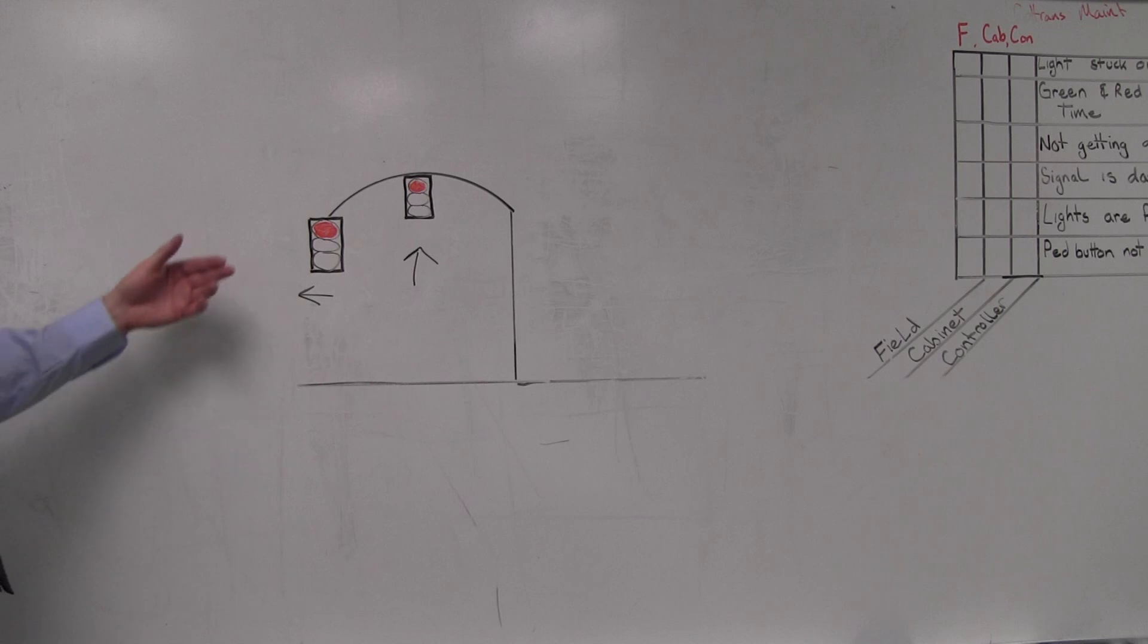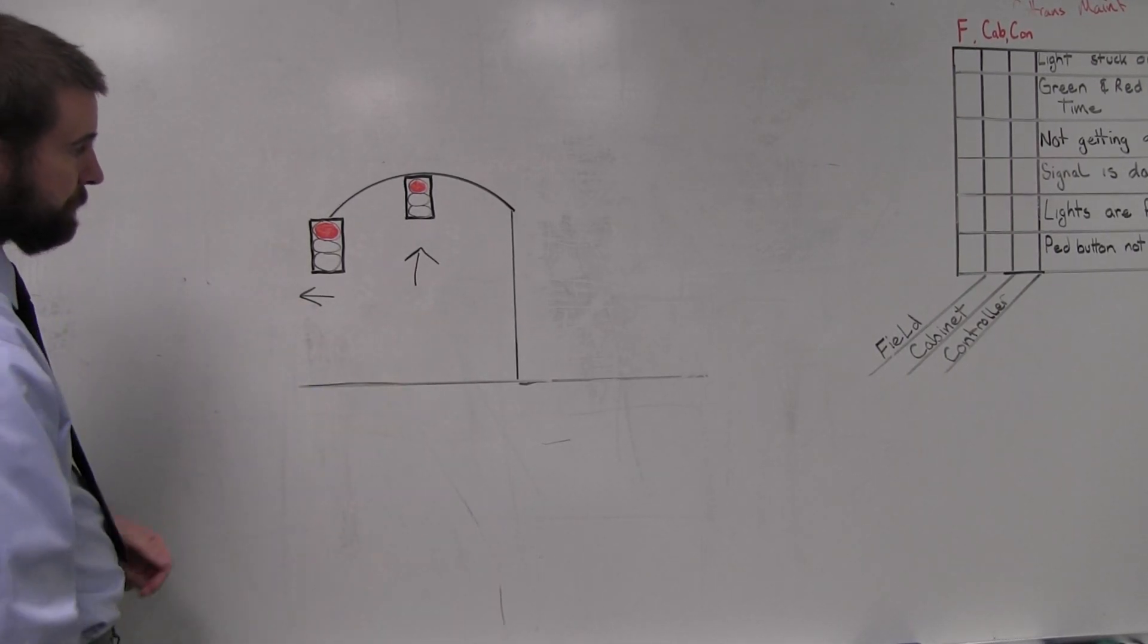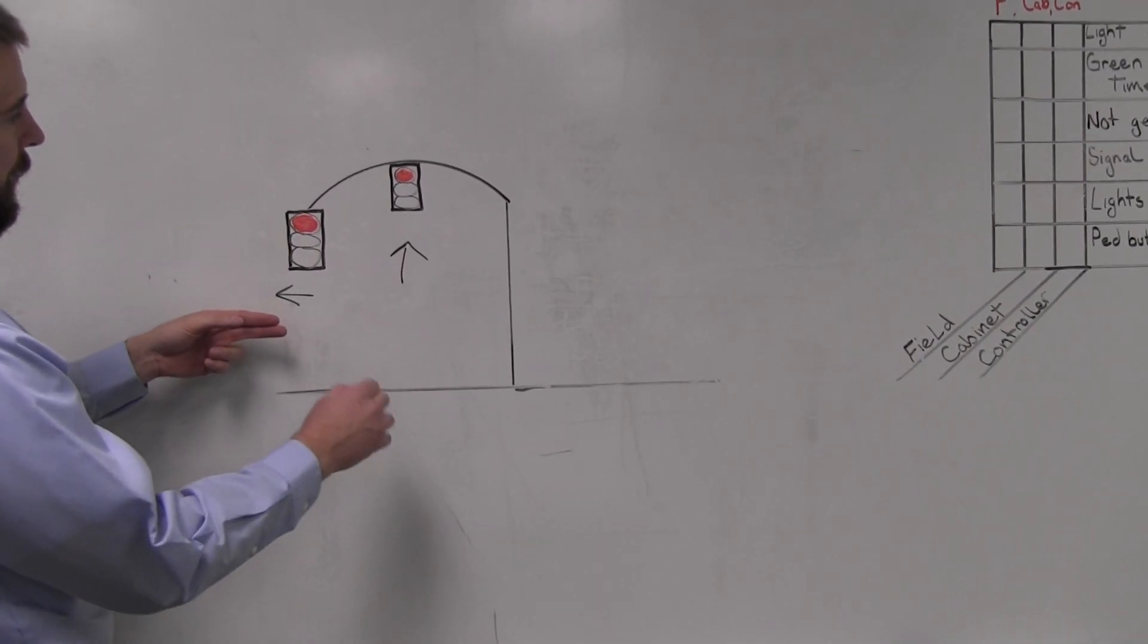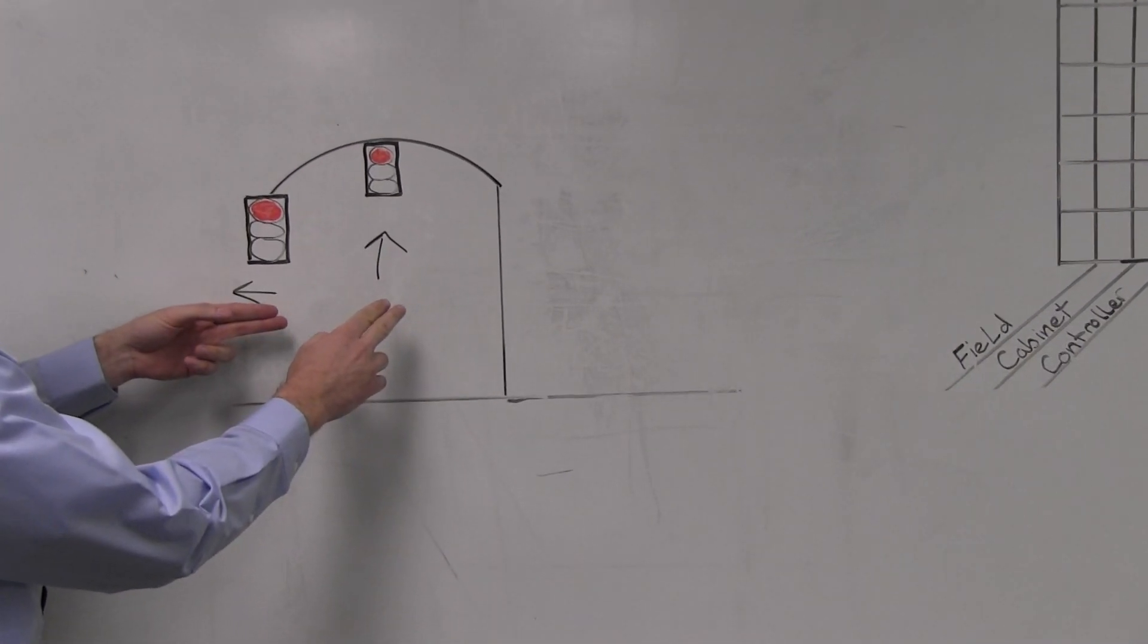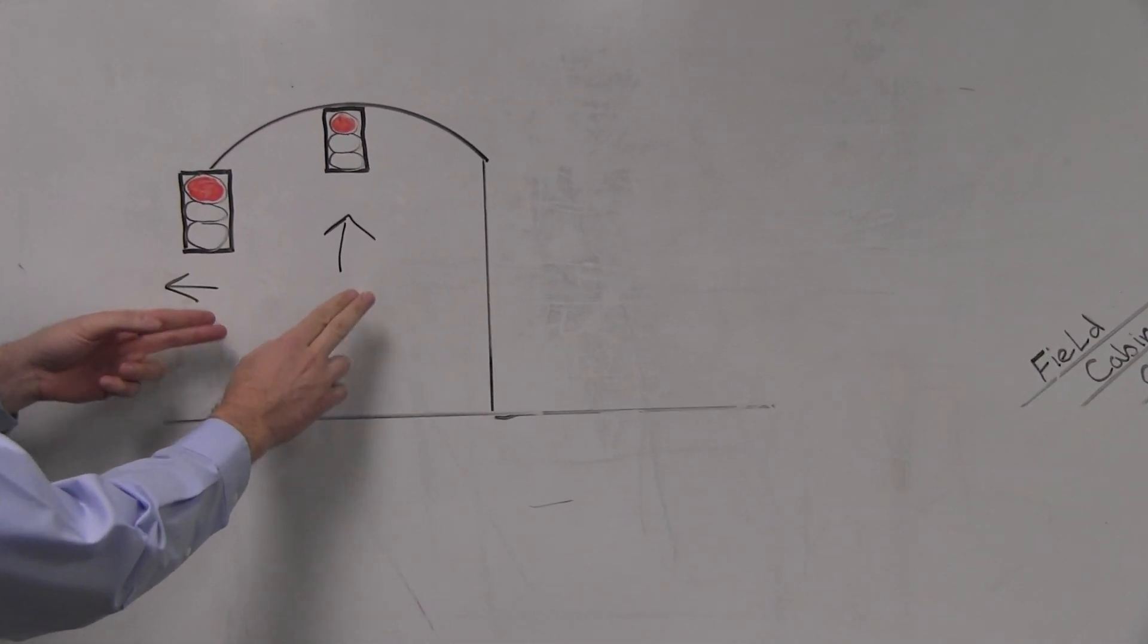Here we can see a left turn lane and a straight through lane. A hardware flash would cause the left turn and the main line to flash on at the same time.